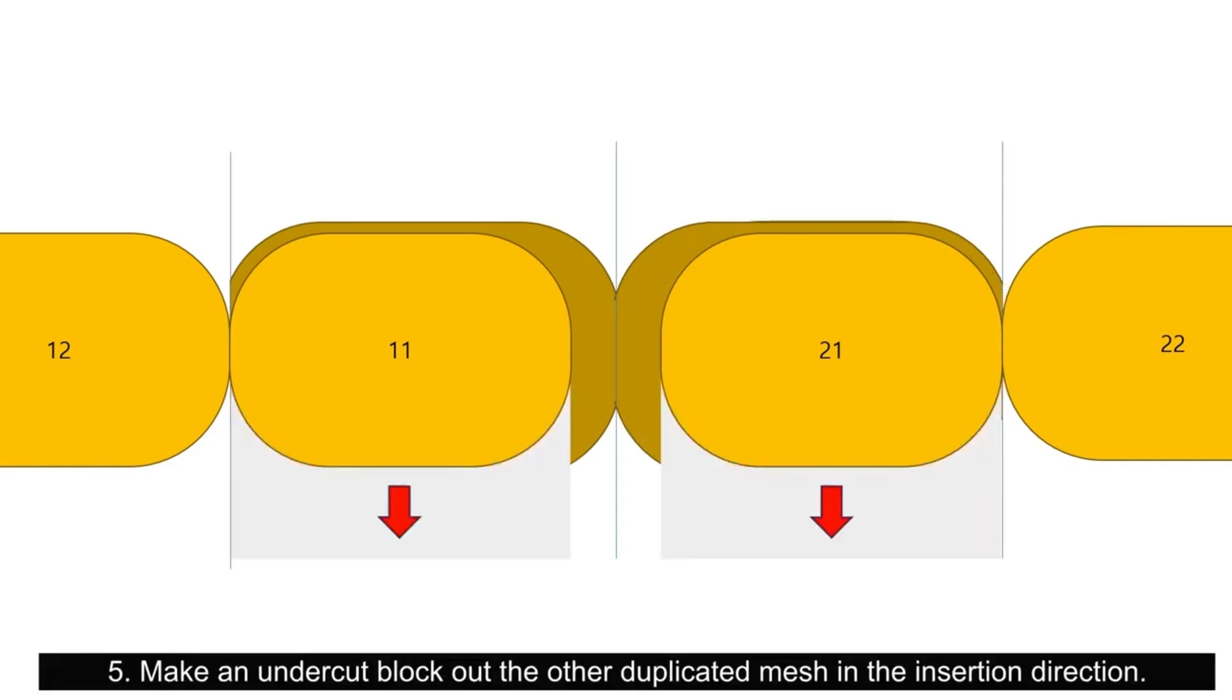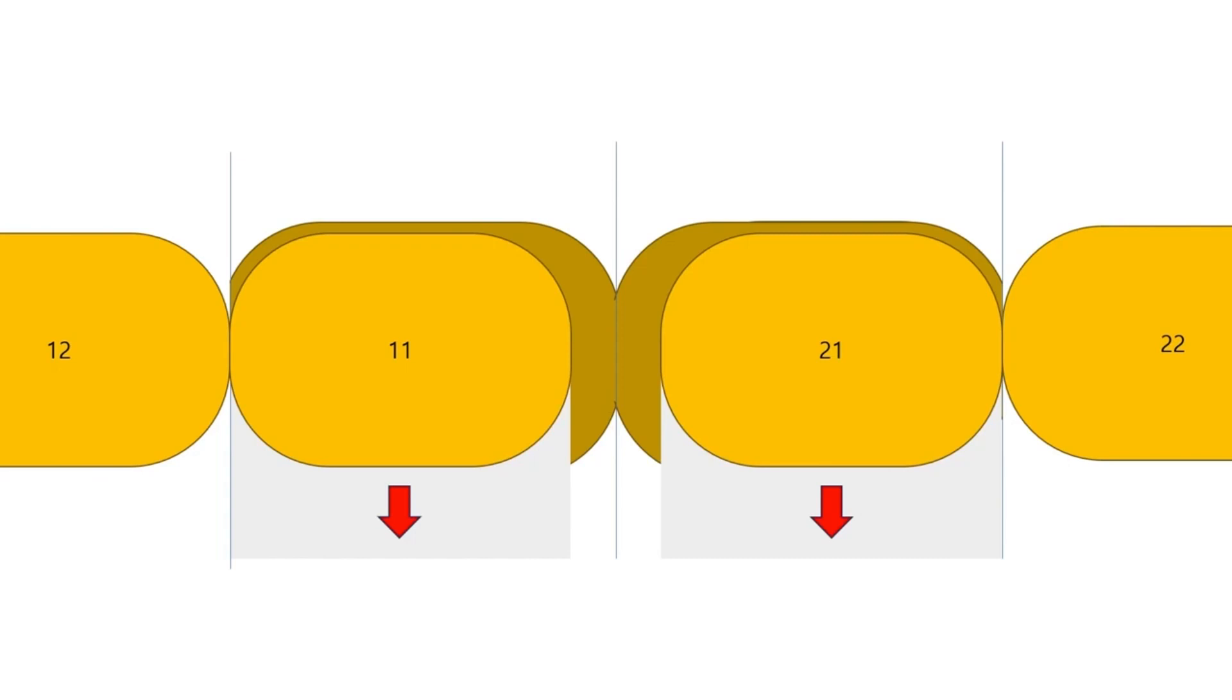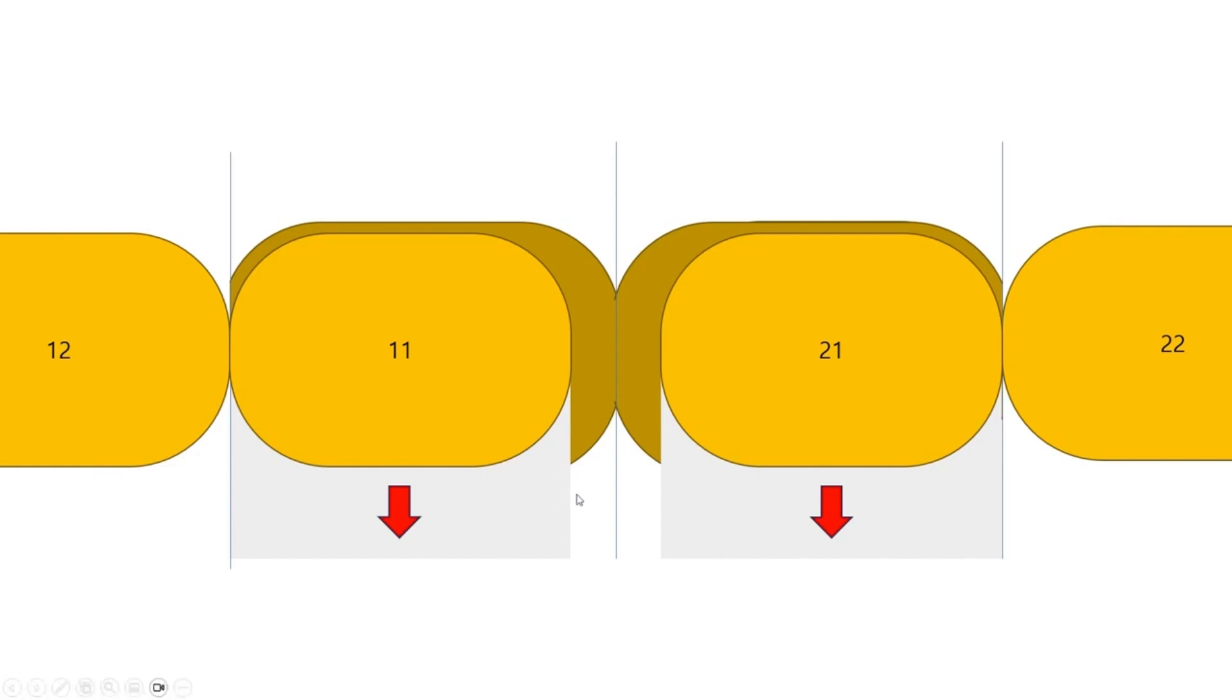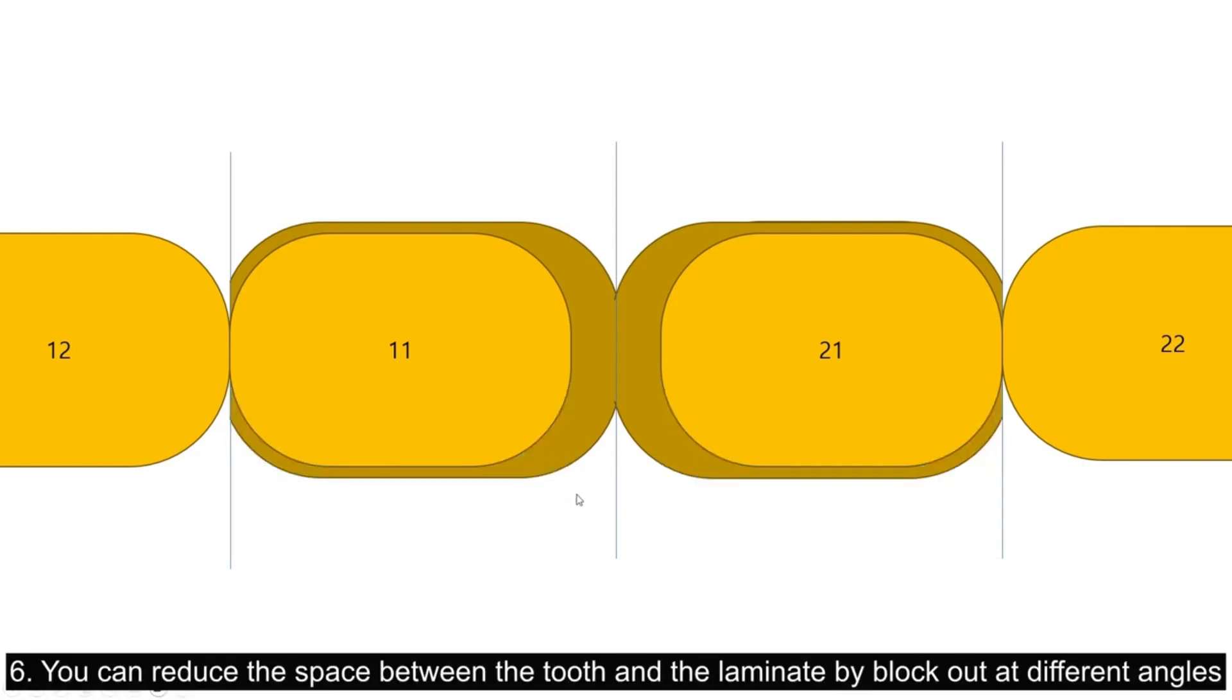Make an undercut block out the other duplicated mesh in the insertion direction. Depending on the direction of the block out, there may be a large space between the laminate and the tooth from the lingual side. You can reduce the space between the tooth and the laminate by blocking out at different angles.